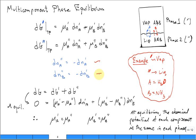And then you say that the overall change in the Gibbs function, the sum for both phases, that must be equal to zero.